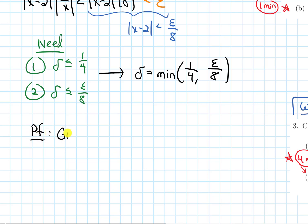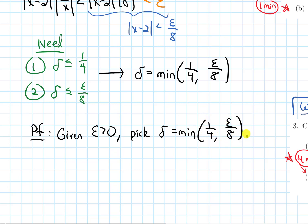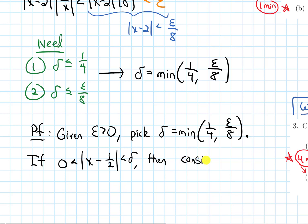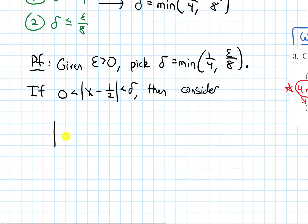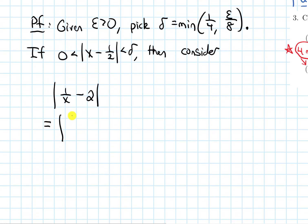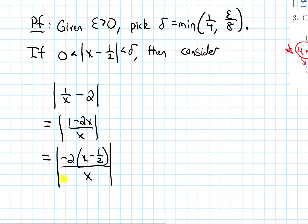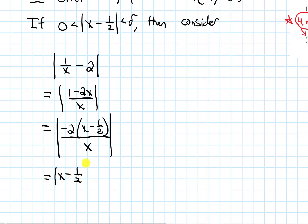Now we are ready for the proof. Given epsilon > 0, we pick delta = min(1/4, epsilon/8). Then if 0 < |x − 1/2| < delta, we consider the absolute value of our function minus the limit: |1/x − 2|. We are hoping this will be less than epsilon, so let's simplify.